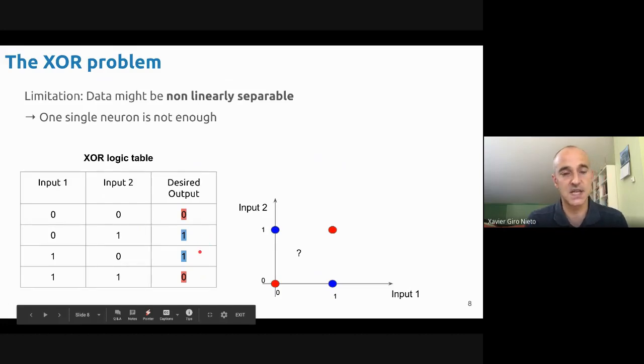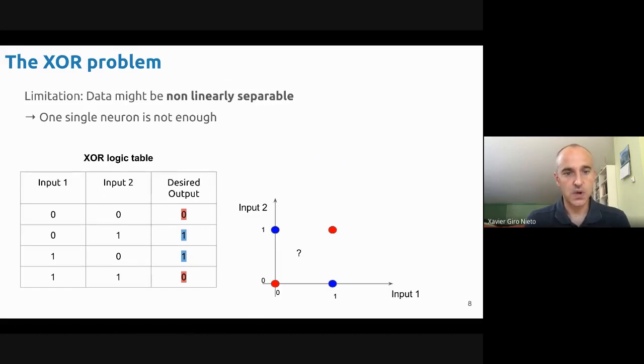So the XOR logic operation basically says that if you have two digits which are the same, the output should be zero, and if the two digits are different, the output should be one. So imagine that you try to train a perceptron to solve this task. There's no way to fit a line that will leave at one side the red samples and other side the blue samples. That's a limitation with which a lot of people struggled for quite a long time.